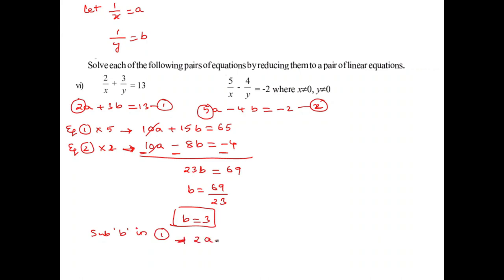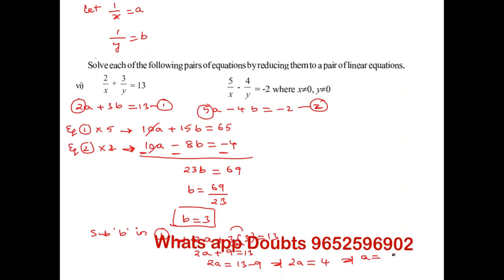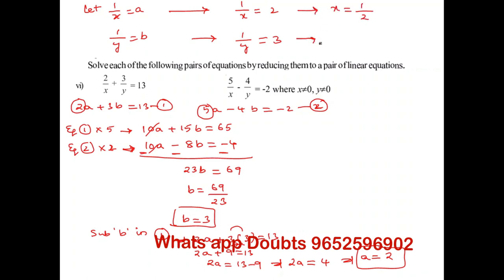Substituting B equals 3 into equation 1: 2A plus 3 times 3 equals 13, giving 2A plus 9 equals 13. Shifting: 2A equals 4, so A equals 2. Therefore 1 by x equals A equals 2, giving x equals 1 by 2. And 1 by y equals B equals 3, giving y equals 1 by 3. The required solution is x equals 1 by 2 and y equals 1 by 3.